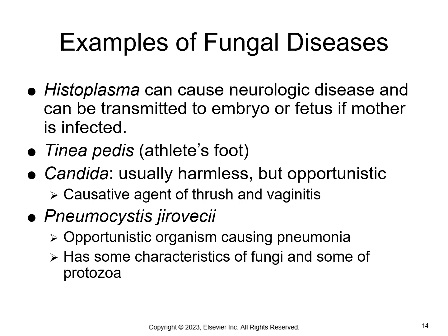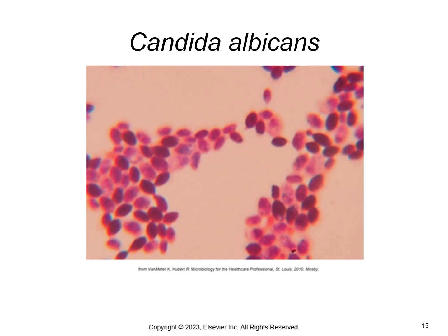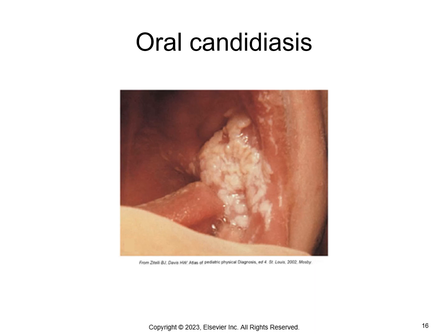Histoplasma is a fungus that causes a lung infection; it can cause neurologic disease and can be transmitted to the embryo or fetus if mom is infected. Tinea pedis is athlete's foot — it infects the superficial layers of the skin. Candida is usually harmless but can cause infections in the mouth, which we call thrush, or in the vagina, which we typically call a yeast infection. Pneumocystis jirovecii causes pneumonia but has some characteristics of both fungi and protozoa. This is an illustration of what candida looks like under a microscope, and this is what oral candidiasis, or thrush, looks like in the mouth.